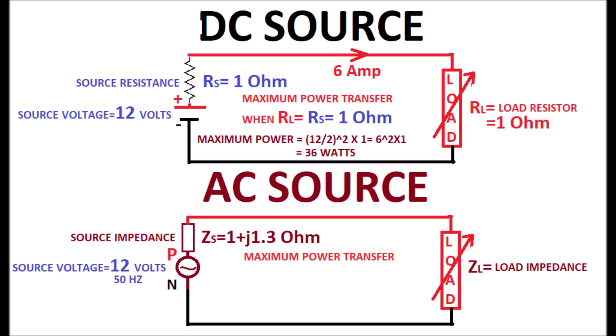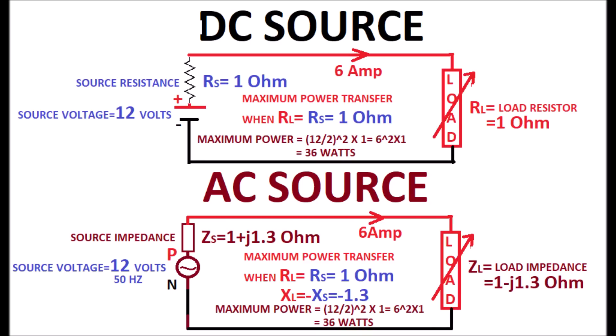Maximum power transfer occurs when the load resistance is equal to the source resistance of 1 ohm and also the reactance of the load is equal to the negative of the reactance of the source of 1.3. Here also the maximum power is 36 watts as shown in the display.